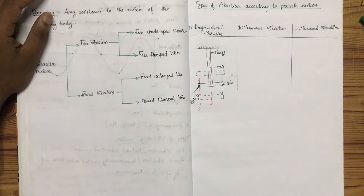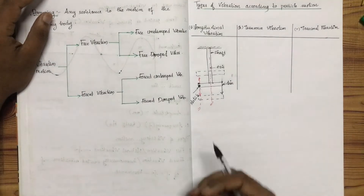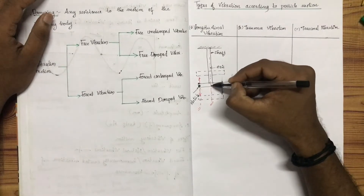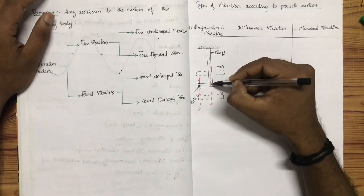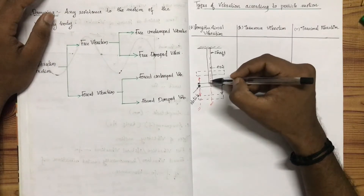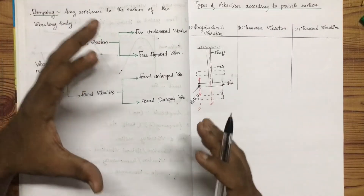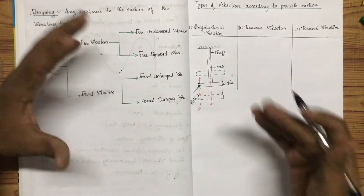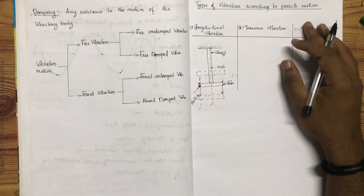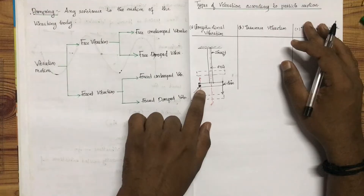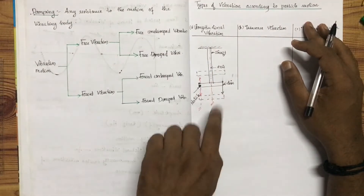What longitudinal vibration does is elongate and contract the shaft. It is going to develop tensile and compressive stresses. In summary, when the particle under motion is vibrating parallel to the axis of the shaft, it is longitudinal vibration.